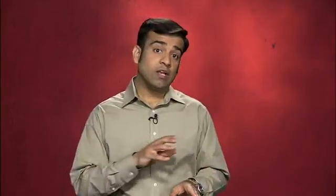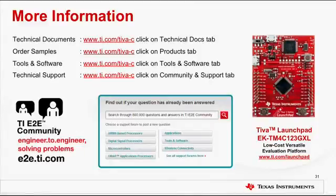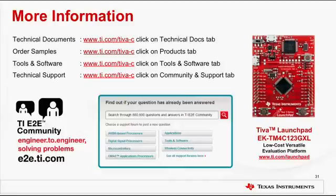Where to go if you need more information? We have an extensive repository of excellent documentation, including device data sheets, user manuals, application notes, etc., that have been created to strengthen your understanding about TM4C123X devices and accelerate design and development of your project. If you have a technical question, you can contact Tiva C-Series experts on TI's e2e forum. Please visit ti.com/tiva-c for technical documents, ordering samples, downloading tools and software, and e2e.ti.com to obtain technical guidance.